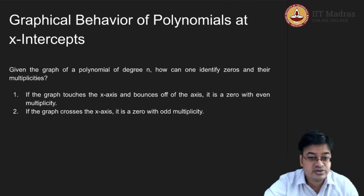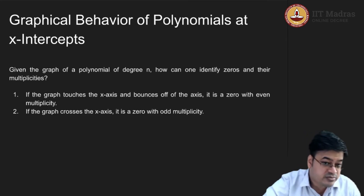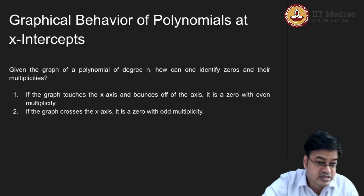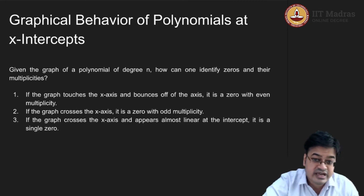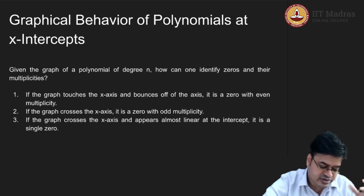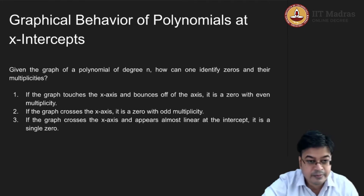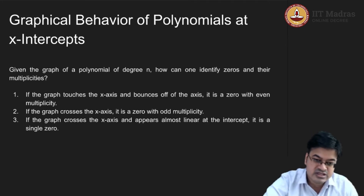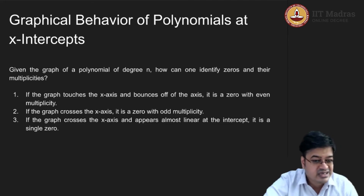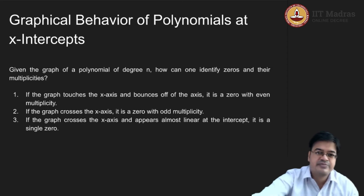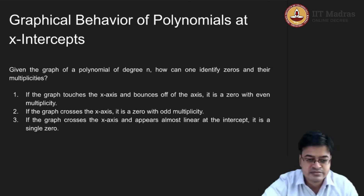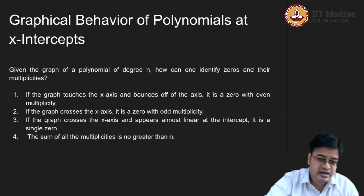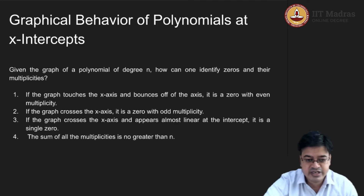If the graph crosses the x-axis and appears almost linear at the intercept, then it is a single order — it appeared only once, it is a linear factor. The sum of the multiplicities should never exceed the actual degree of the polynomial.